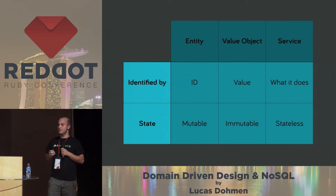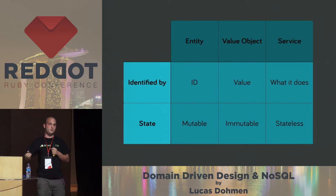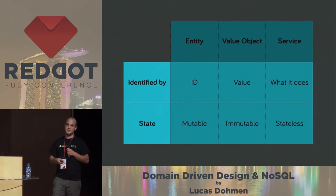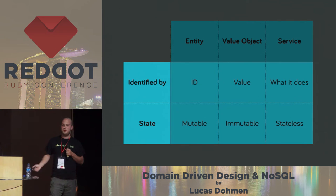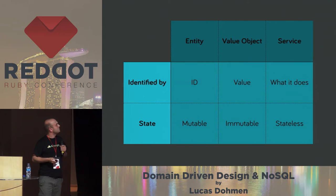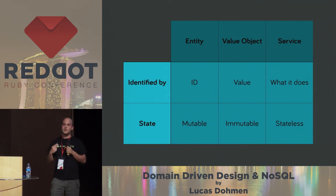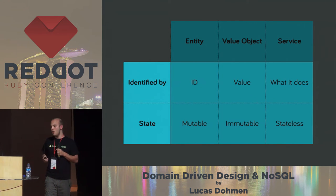Then we have services, and services are things that do things — they are just identified by what they do. For example, a service that sends mail to people would be identified by the fact that it sends mail to people. And it's hopefully stateless — I see a lot of services that are not, but hopefully they are. So if you do the same thing twice with a service, it should produce the same output twice.